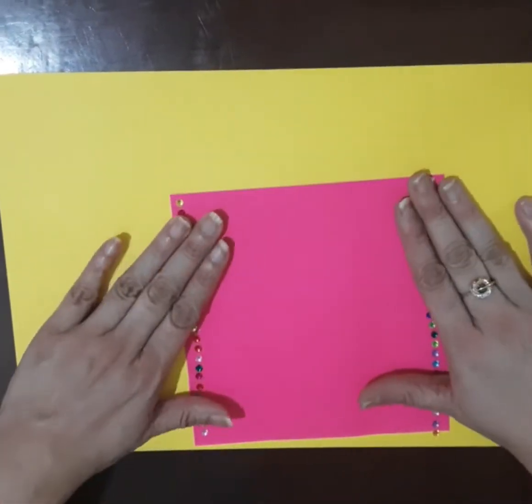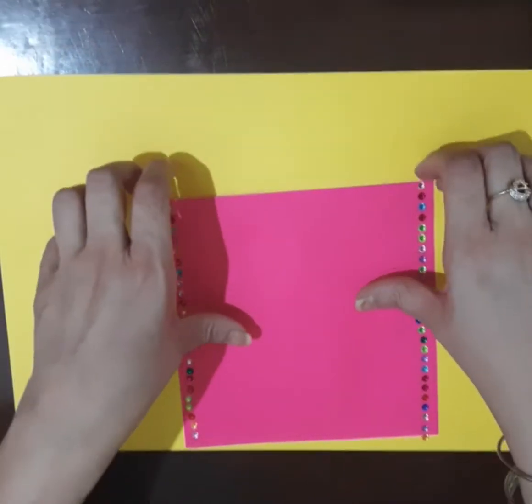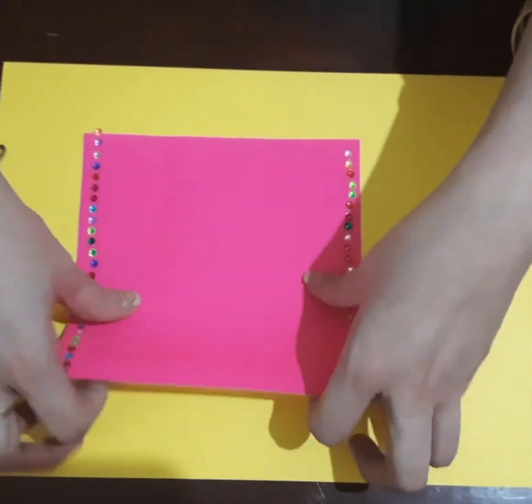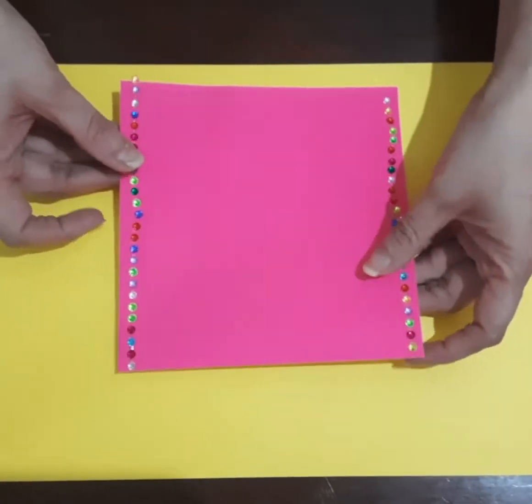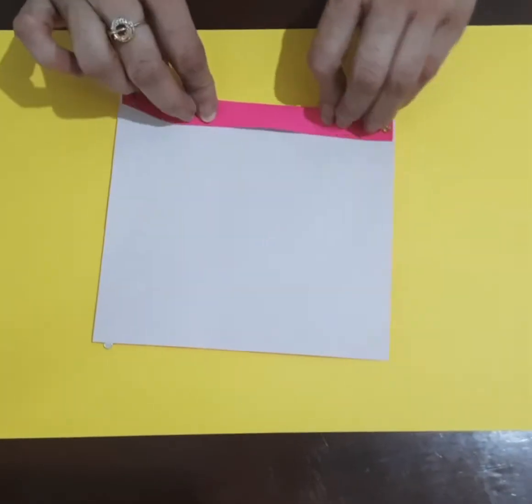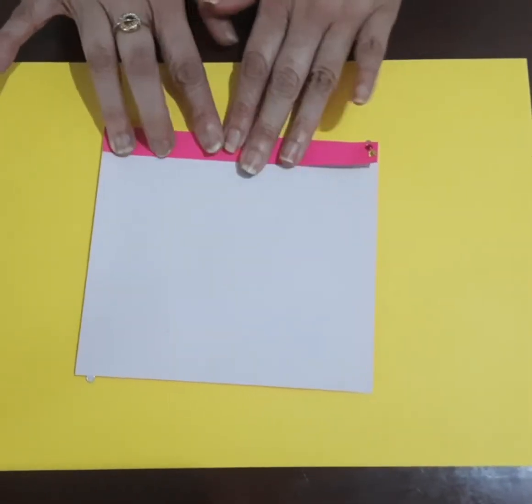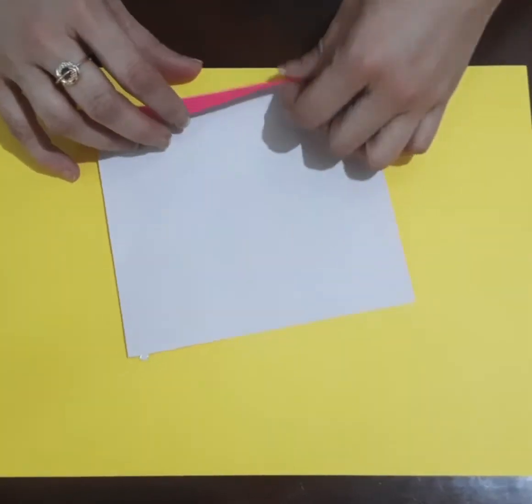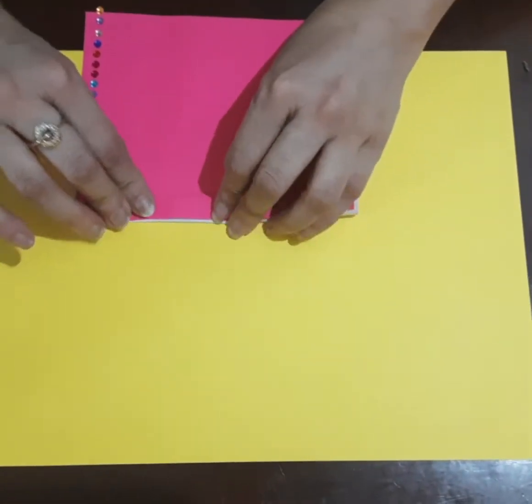Once we have stuck these stickers, what we have to do is turn this paper upside down and make a fold of about one centimeter width. We will fold, then flip the paper and fold it again one centimeter like this.